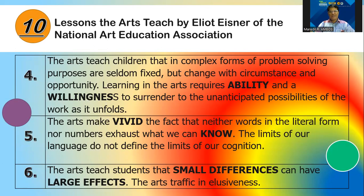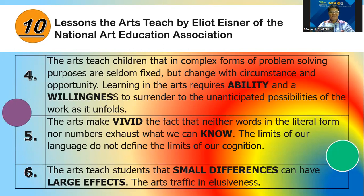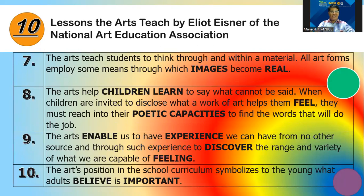Lesson five: the arts make vivid the fact that neither words in their literal form nor numbers exhaust what we can know — the limits of our language do not define the limits of our cognition. Lesson six: the arts teach students that small differences can have large effects. Lesson seven: the arts teach students to think through and within a material — all art forms employ some means through which images become real. Lesson eight: the arts help children learn to say what cannot be said.